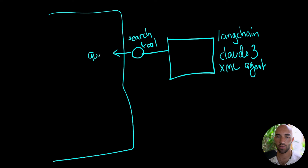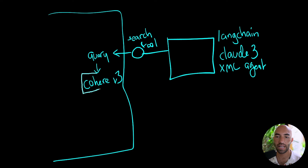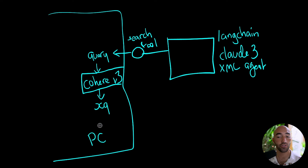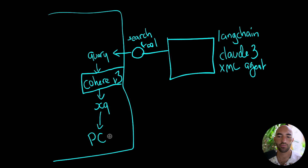Our RAG pipeline is going to be consuming a query from our search tool, transforming that into an embedding using Cohere v3 — that's an embedding model that gives us our query vector which I'll call xq. We take that over to Pinecone, our vector database, which contains all of our pre-embedded archive papers, and that is going to return a set of similar or relevant contexts — let's say three of those.